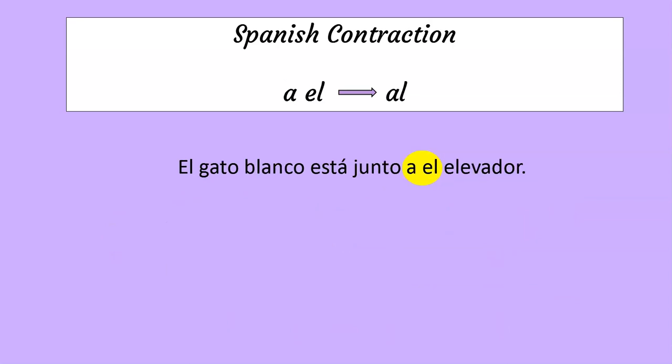The same is the case with the contraction al. When a and el are next to each other, they have to make the contraction al. So the right sentence would be: el gato blanco está junto al elevador. This is incorrect. This is the correct form.